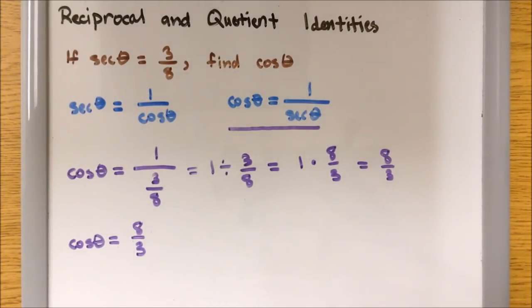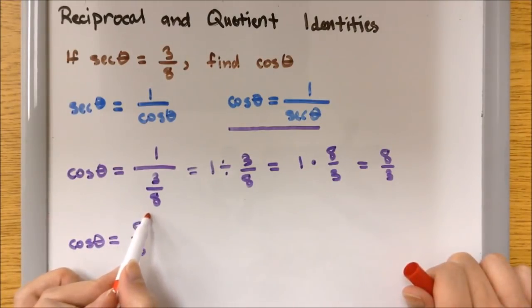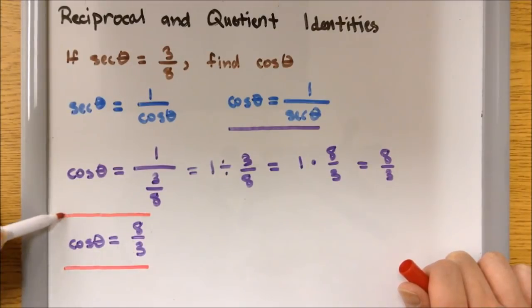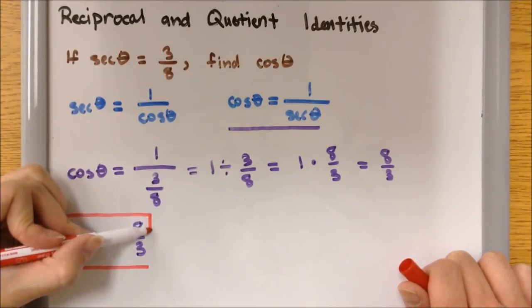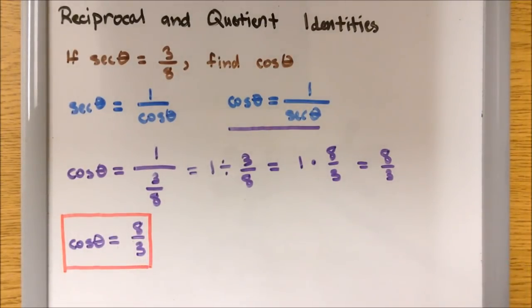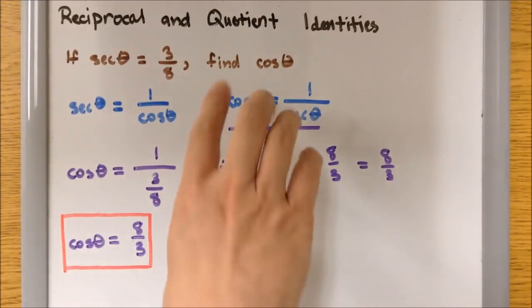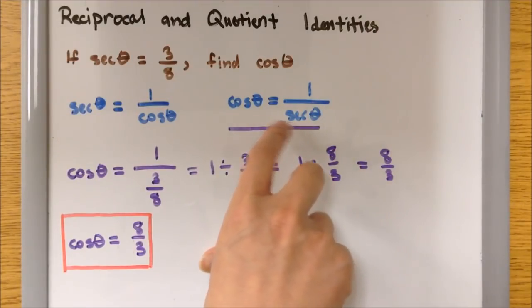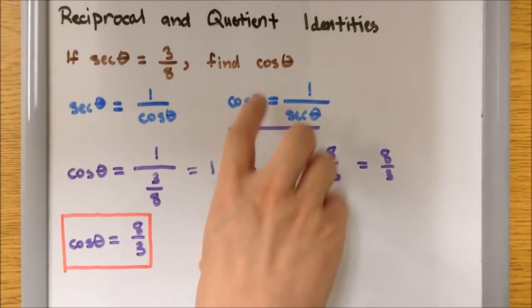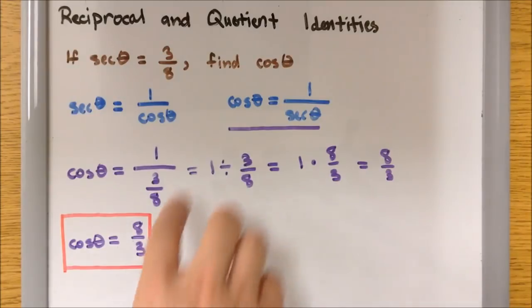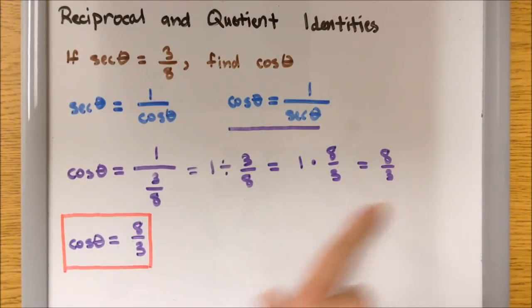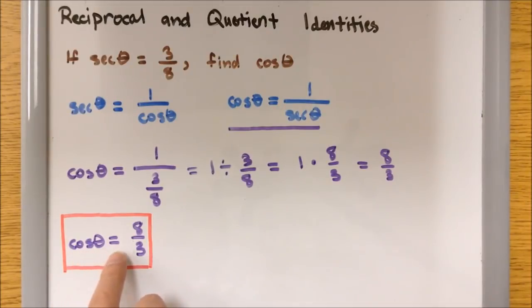So cosine theta is equal to 8 over 3, and that is all we have to do when using reciprocal identities. I used the reciprocal identity between cosine and secant — cosine theta equals 1 over secant theta — plugged in the value for secant theta, simplified, and got cosine theta equals 8 over 3.